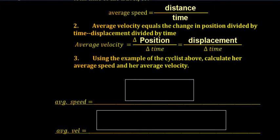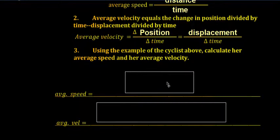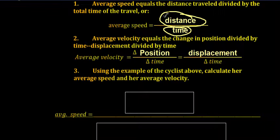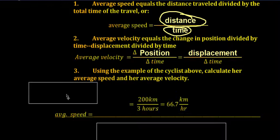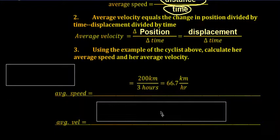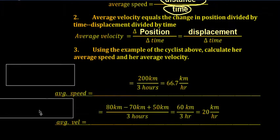Using the cyclist example, her average speed is going to be distance over time. Each leg of her ride took one hour, so the total distance was 200 km and the total time was 3 hours — giving 200 over 3, which is 66.7 kilometers per hour. Her average velocity, however, because she only finishes 60 kilometers from where she started, is displacement divided by time: 60 km east divided by 3 hours, which is 20 kilometers per hour east.